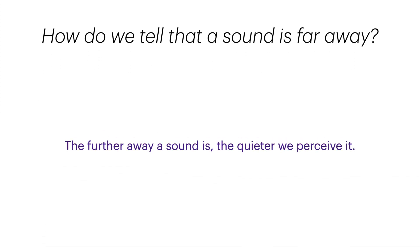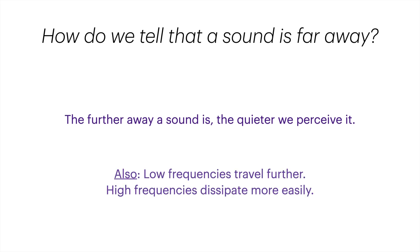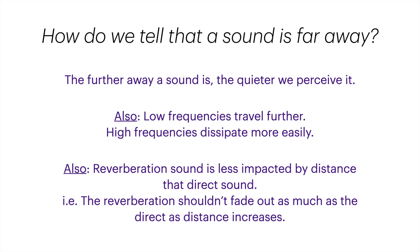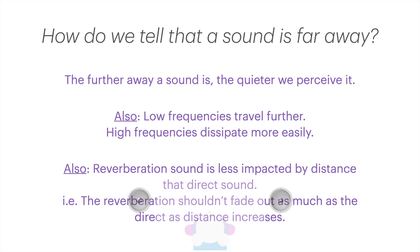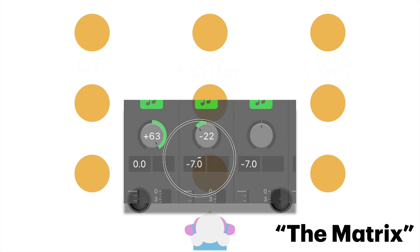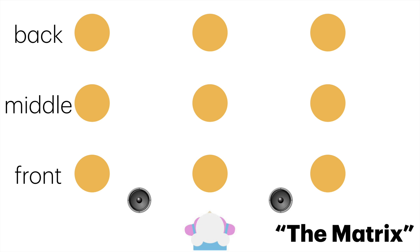So how do we know when a sound is getting further away? First and most obviously, the further away a sound is, the quieter we perceive it. Second, low frequencies travel further and high frequencies dissipate more easily, which means the further away a sound is, the more we hear the low frequencies and the less we hear the highs. Also, the sound of the reverberation is less impacted by distance than the direct sound, which means the reverberant sound shouldn't fade out as much as the direct does as distance increases. This is something I believe I heard in a Scott Wyatt talk — he made his students demonstrate that they could place sounds in a matrix.